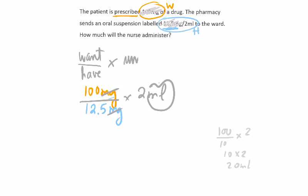Using the calculator: 100 divided by 12.5 multiplied by 2, we get 16. So the answer is 16 mils. Read the question again and check if we answered what was asked — how much will the nurse administer? 16 mils.